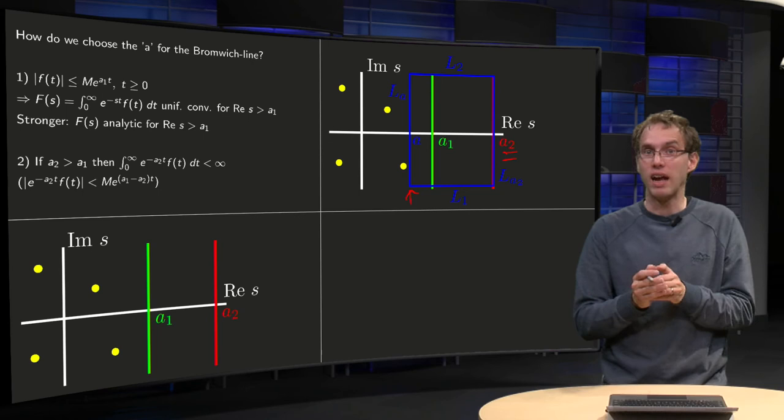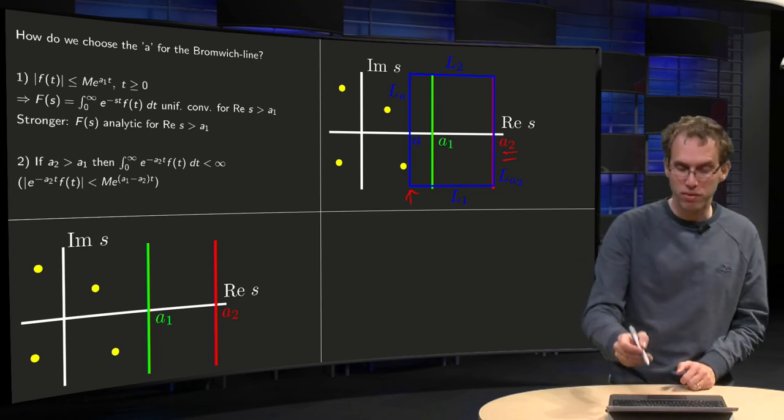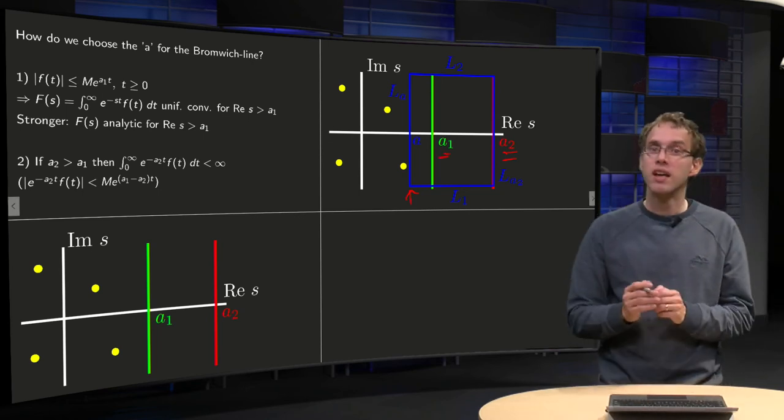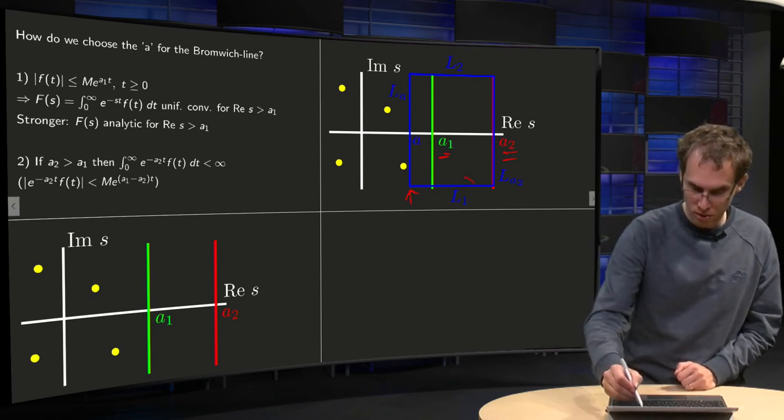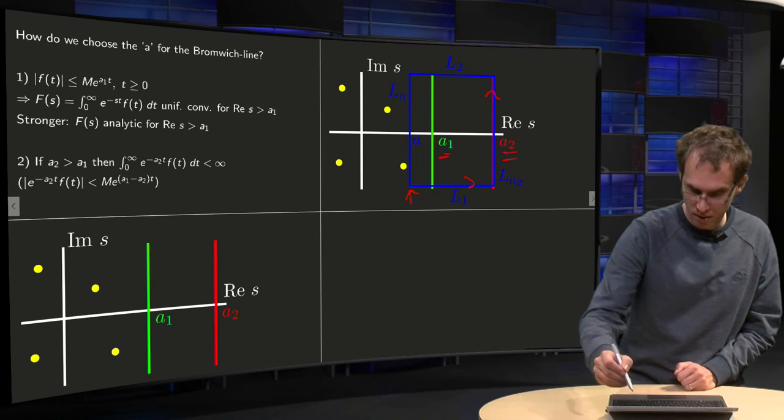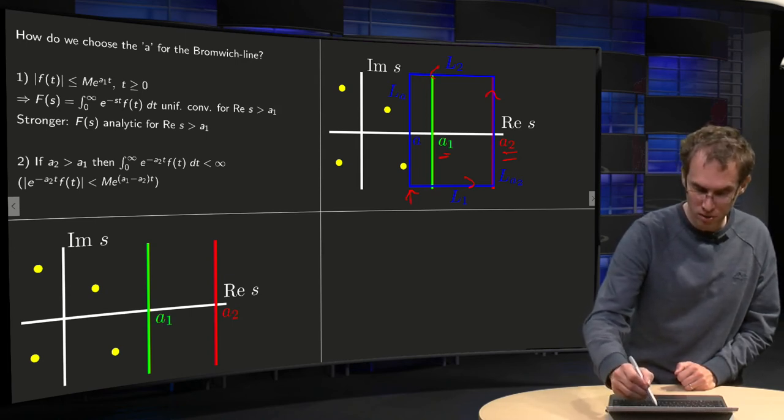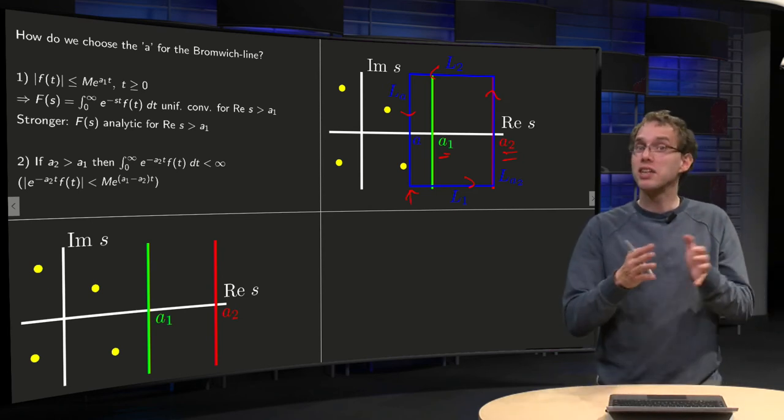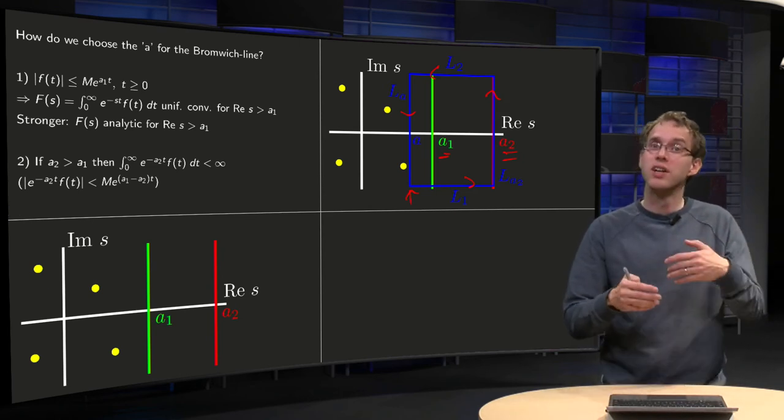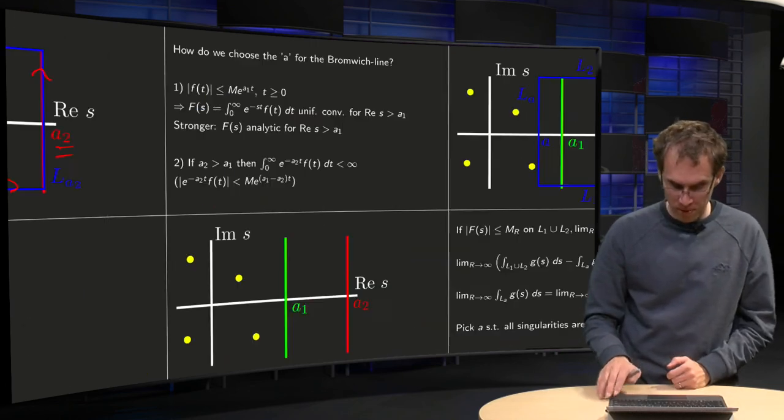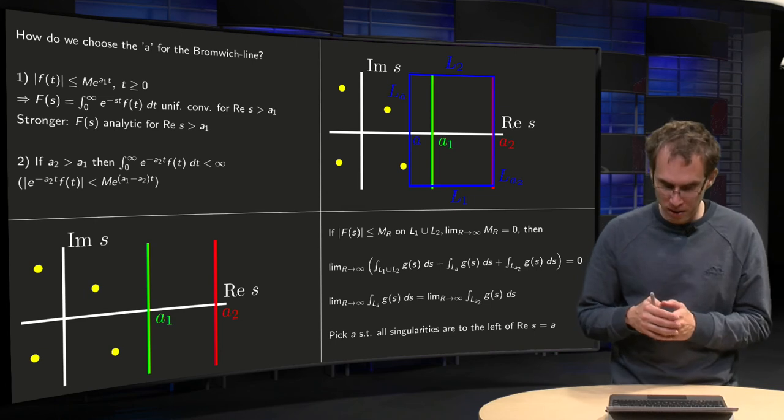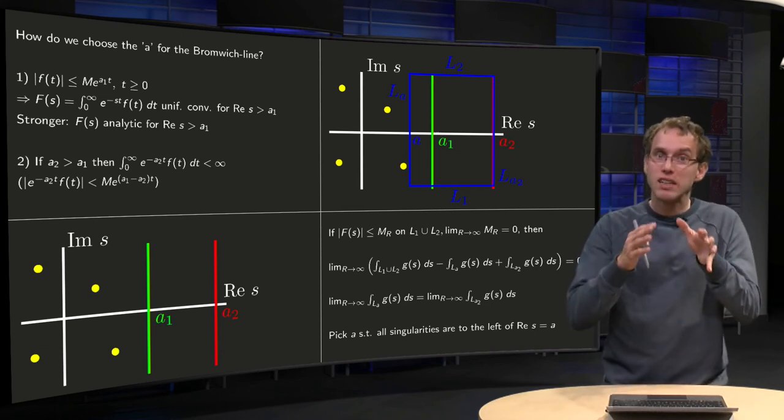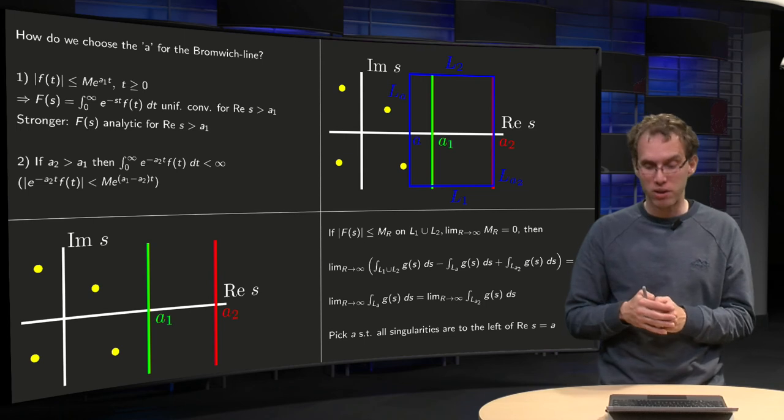So it may very well be that our a could have been to the left of our a₁. But then we can do the following trick. We can form the contour along l₁, real part of s equals a₂, l₂ and the other one over here. We can form the contour. I see no yellow dots inside. So the integral along the contour consisting of l₁, l₂, l_a₂ and l_a, that integral equals zero because we can apply Cauchy's theorem.